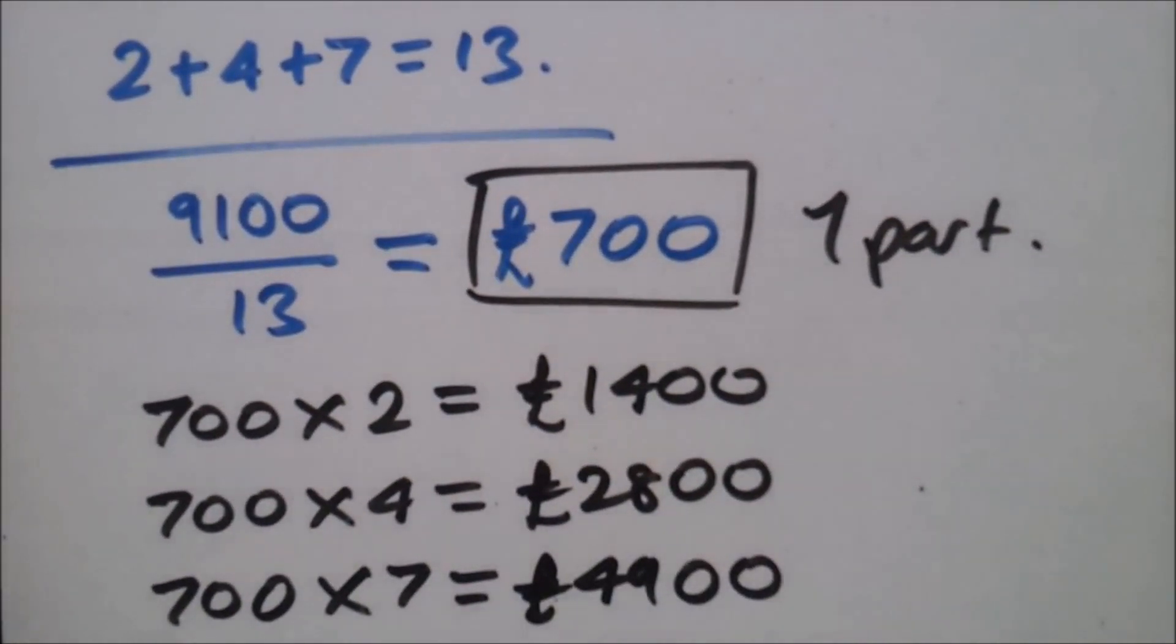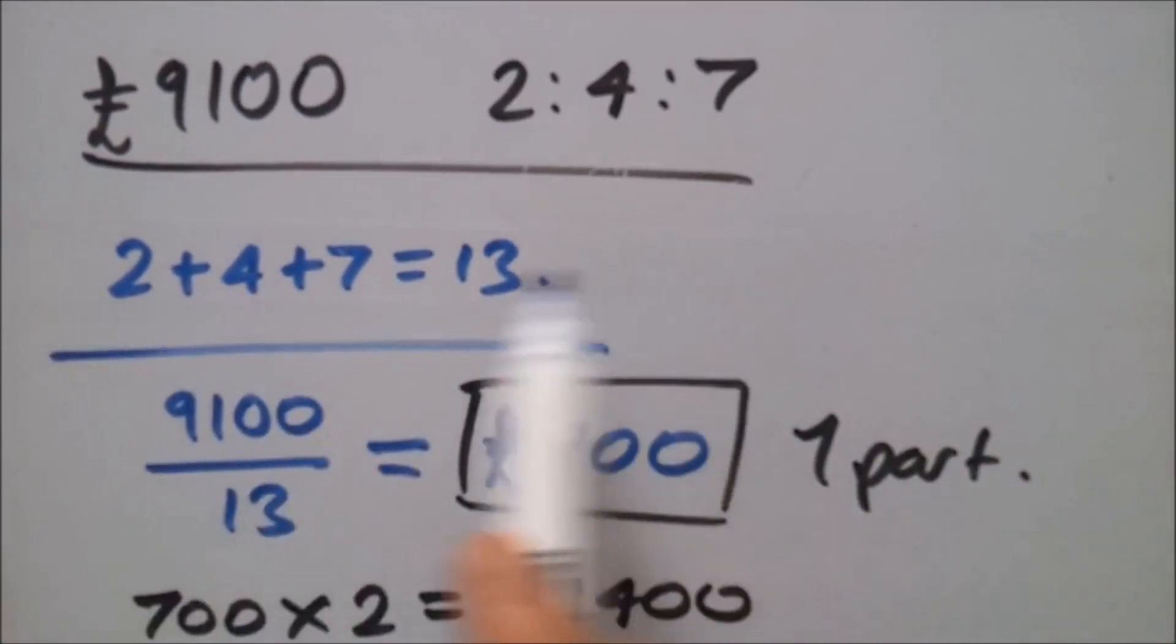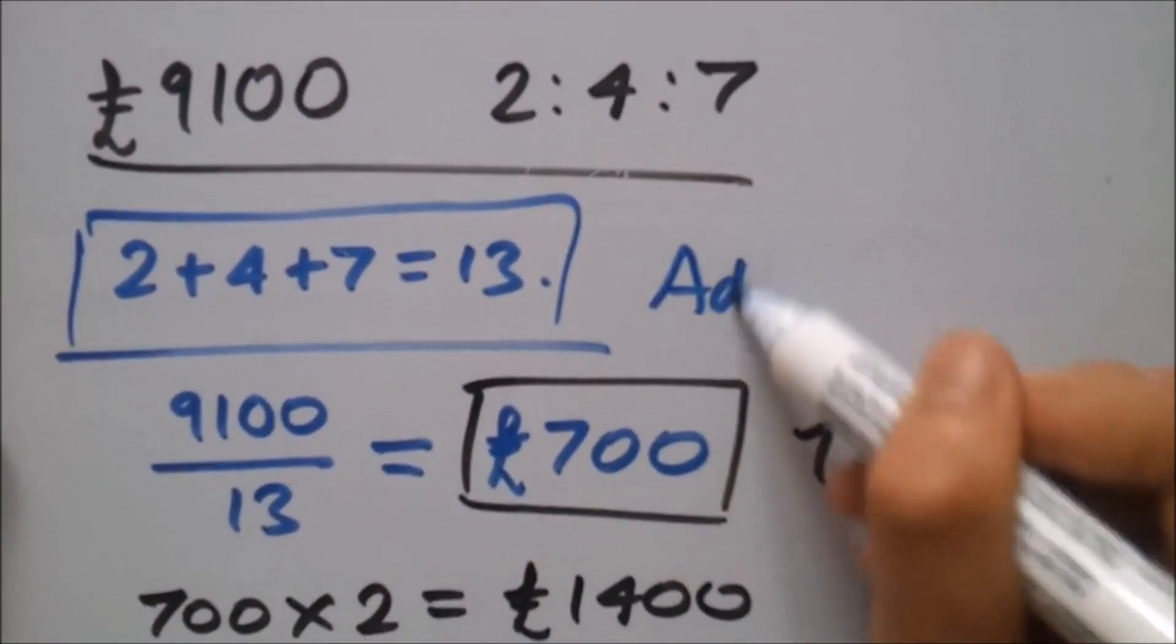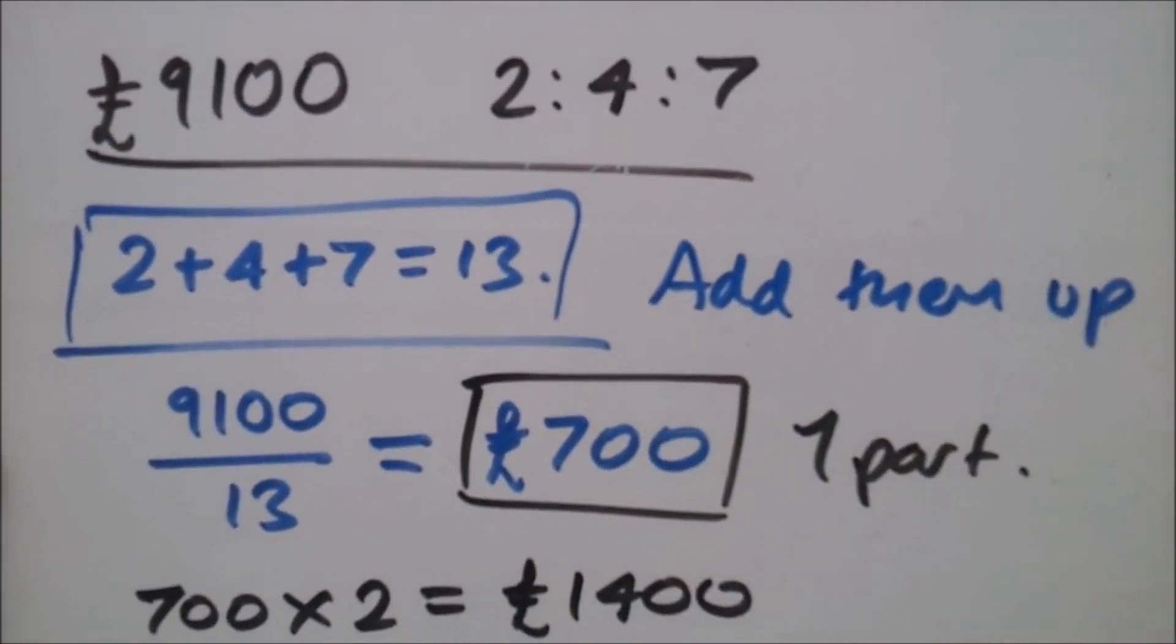So yeah, that's pretty much the gist of it. Let me just recap quickly what the steps were. So, step one, add up the ratios.